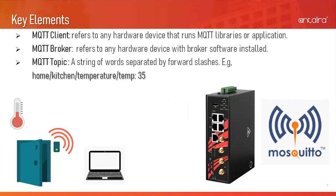The MQTT framework consists of the following major elements: MQTT client, MQTT broker, and MQTT topic. MQTT client refers to any hardware device that runs MQTT libraries or applications. For example, a Raspberry Pi with a temperature sensor. If there is a change in temperature detected by the temperature sensor, then the Raspberry Pi will send out a message to the MQTT broker. An MQTT client can either become a publisher, a subscriber, or both.